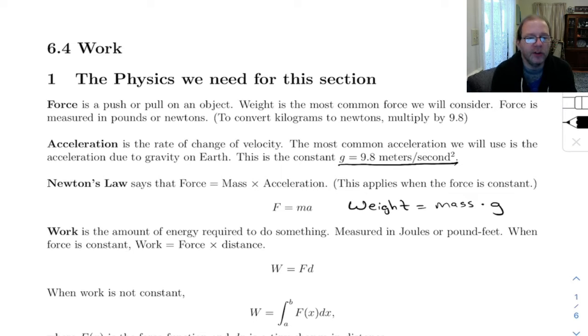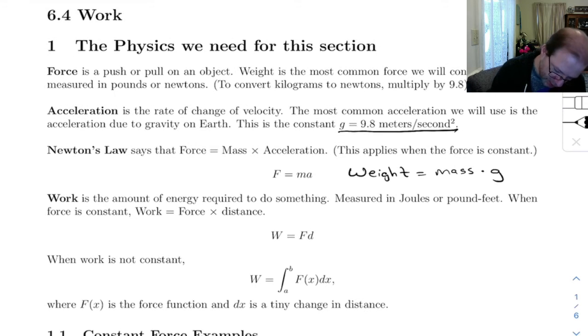And that little g there corresponds to the acceleration due to gravity on Earth. If you go to a smaller planet like Mars, it's going to be less. So let's look at this down here. Work is the amount of energy required to do something, and it's measured in joules or pound-feet. Now I didn't write it on here, but one joule is equal to one newton times one meter.